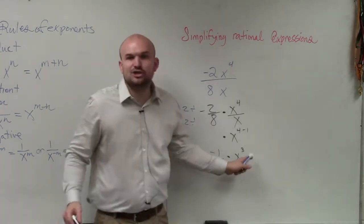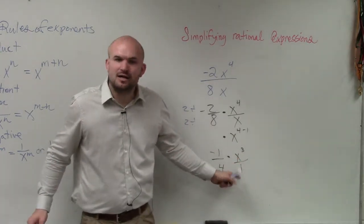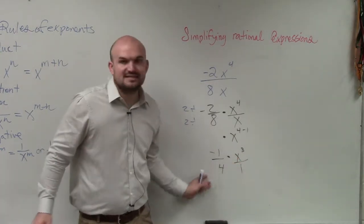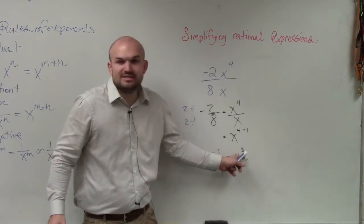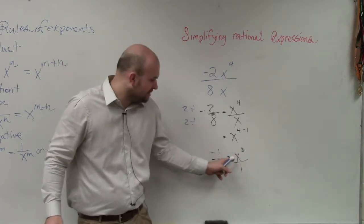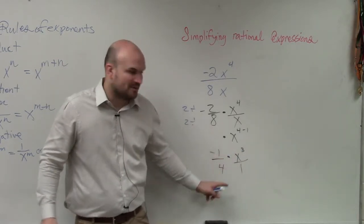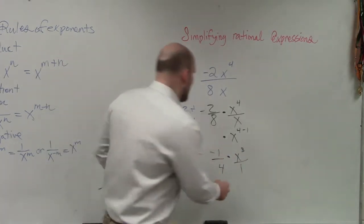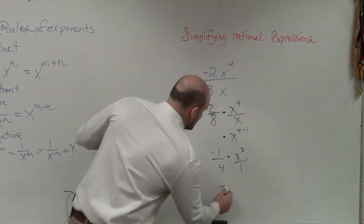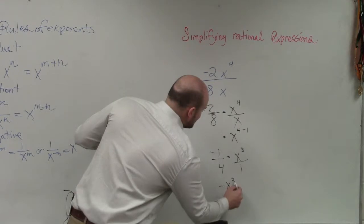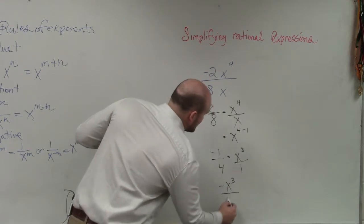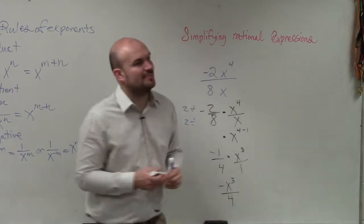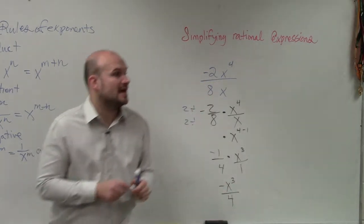And that's why I wrote x cubed over 1, so that you guys can see that the x cubed is still in the numerator and the 4 would be in the denominator. Therefore, our final simplified version is negative x cubed divided by 4.